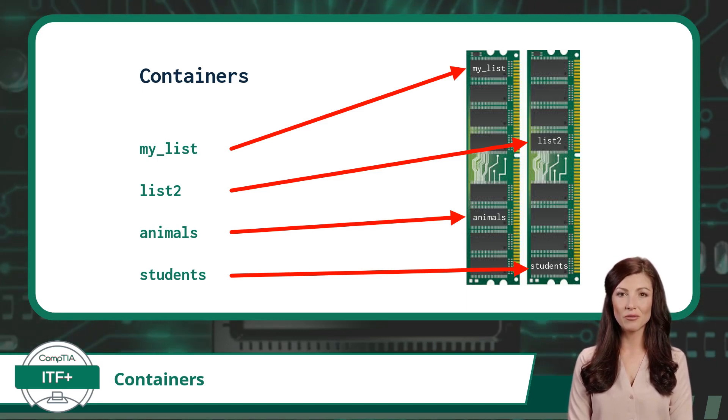So how are these containers different from a standard identifier? Well, they are capable of holding more than one data element at a time. While a standard variable or a constant can only hold one data element at a time, a container can hold one, two, three, or more data elements simultaneously.